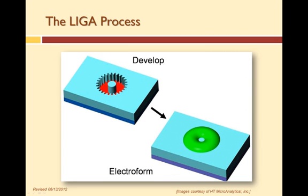After expose is develop. In develop, the exposed PMMA is removed leaving a mold with high aspect ratio cavities, holes, or trenches. These cavities are filled with metal using an electroforming or electroplating process. Each of these processes is explained in more detail in the micromachining learning module.